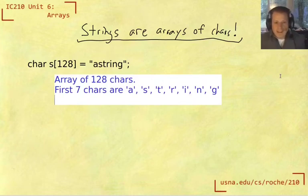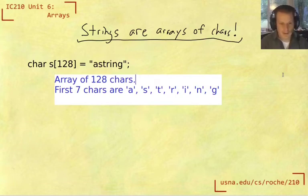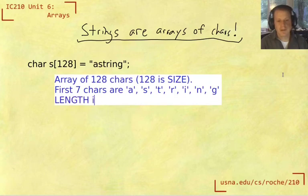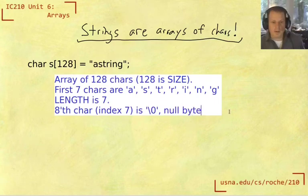And one thing that gets really interesting with strings is that we frequently don't use the whole size of that array for our string. So like in this case, and in most cases, we declared this to be an array of size 128, but in fact we're only really using the first 7 to hold our string. And so the length, so 128 is the size. So the length of this string is 7, and that's because the 8th char, which is at index 7, is a special one which is, you write it like this in C, backslash 0, which is called a null byte, or a null character.